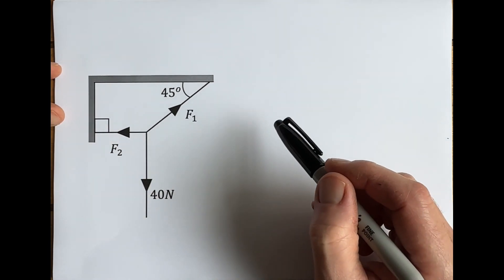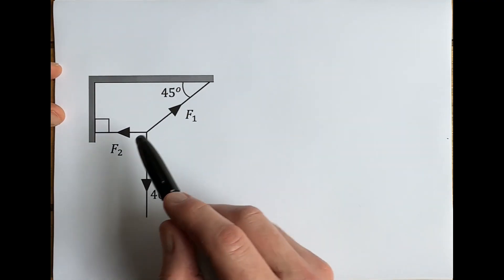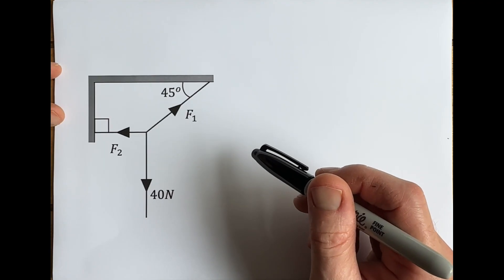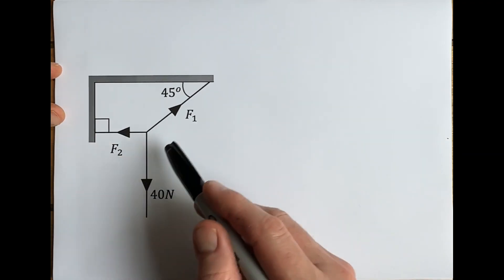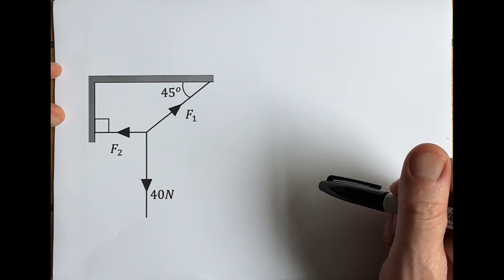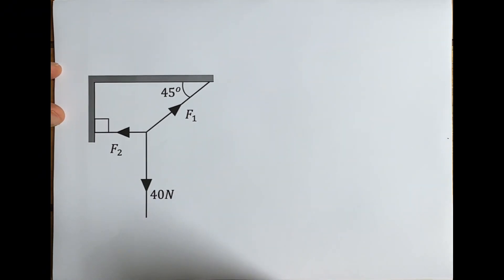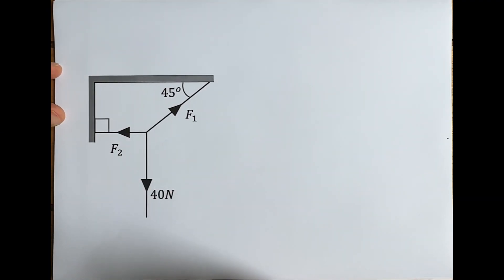We're assuming these cables are very light, and we need to work out these forces F1 and F2. The reason we're calling this a statics problem is we're assuming that the whole system is in equilibrium—nothing is moving, it's just hanging stationary from these supports. For something to be in equilibrium like this, the resultant force on the system must be zero.